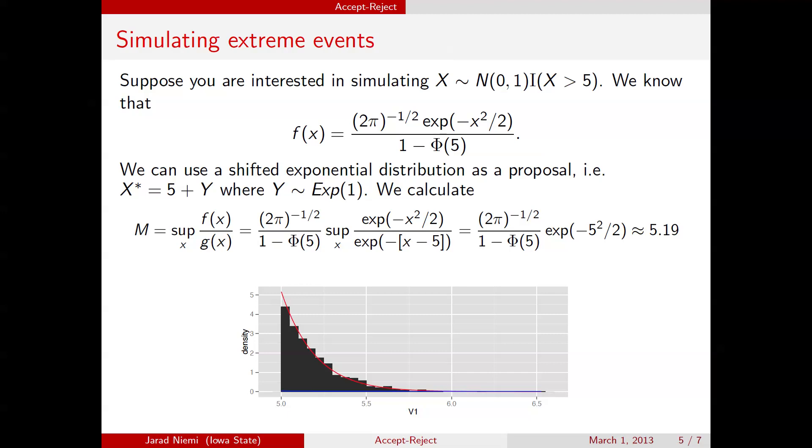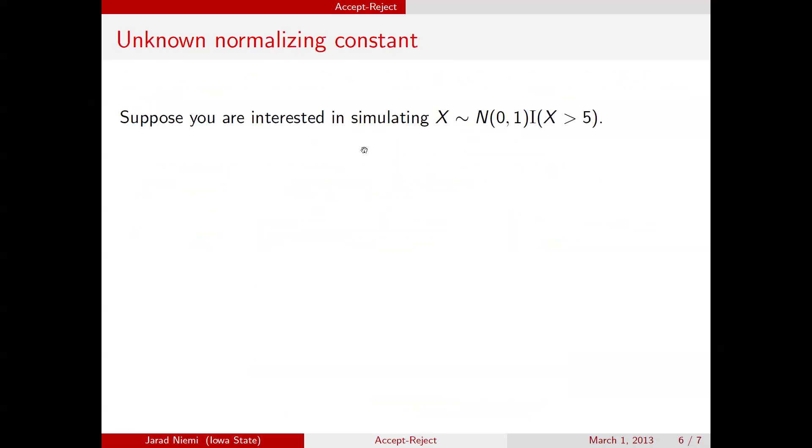So now I want to continue with this example and show that we actually did not need to know this normalizing constant at all. So suppose we're still interested in simulating from the same density, but this time, we're just going to use the part that's not normalizing constant. And just to distinguish it, we're going to call this f sub 2. So this is the unnormalized density.